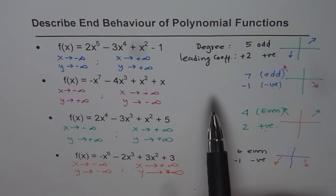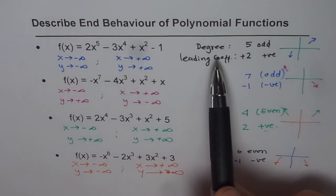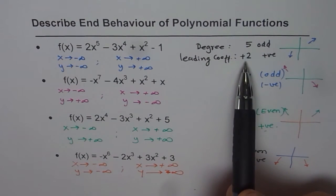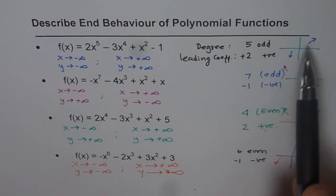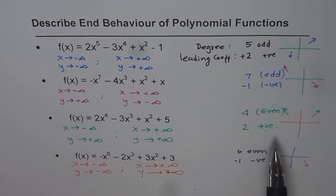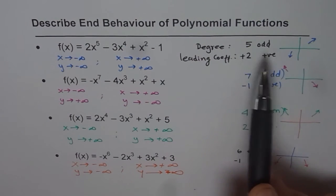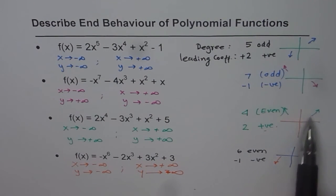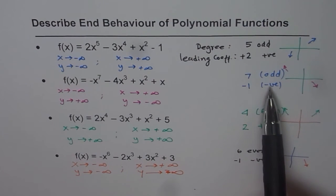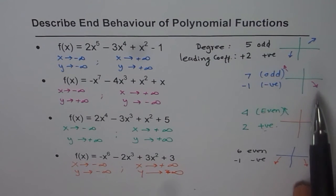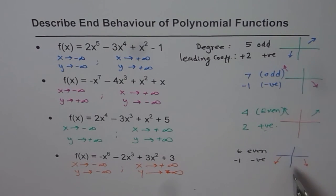So what we need to see from the equation is the degree of the polynomial and the sign of the leading coefficient. If the degree is odd, both ends face in opposite directions. If the degree is even, both ends face in the same direction. If the leading coefficient is positive, the right side is up. If the leading coefficient is negative, the right side is down. That helps us determine the end behavior of any given polynomial function in standard form. Thank you and all the best.